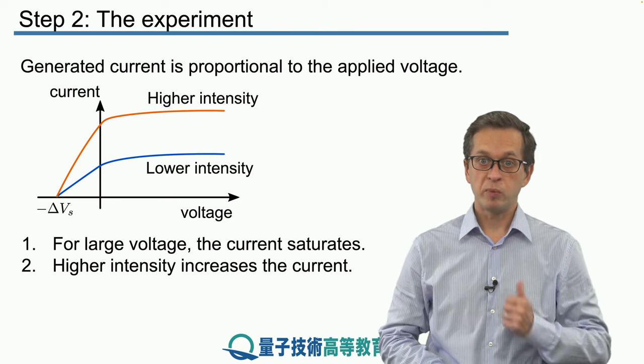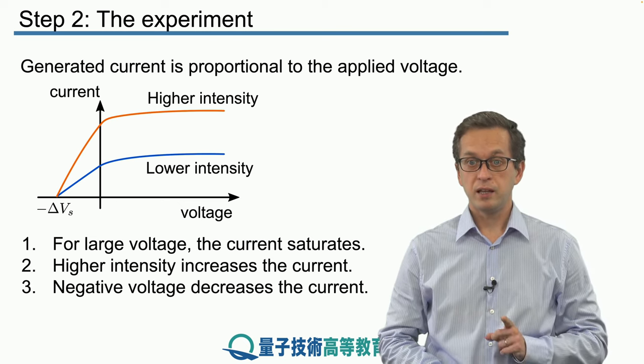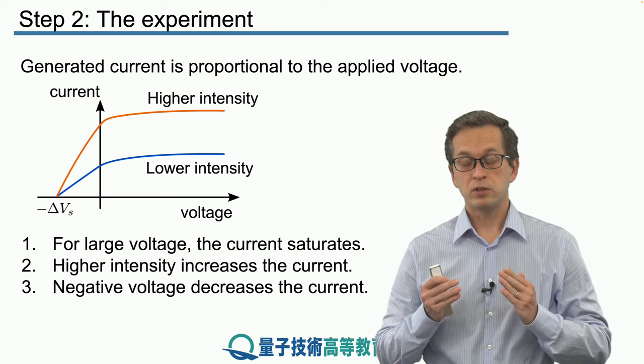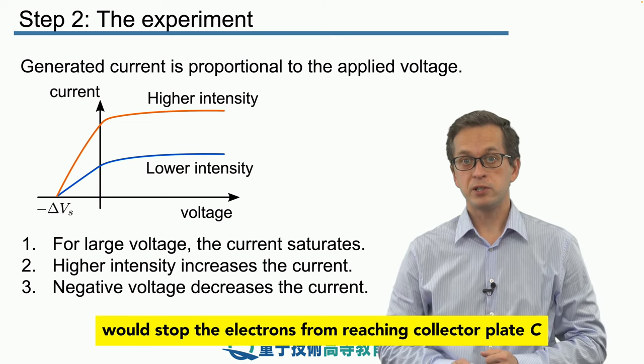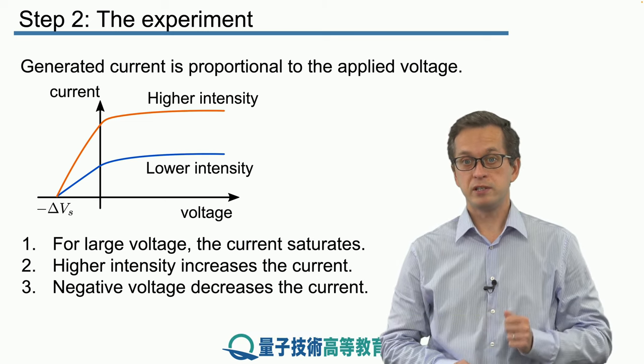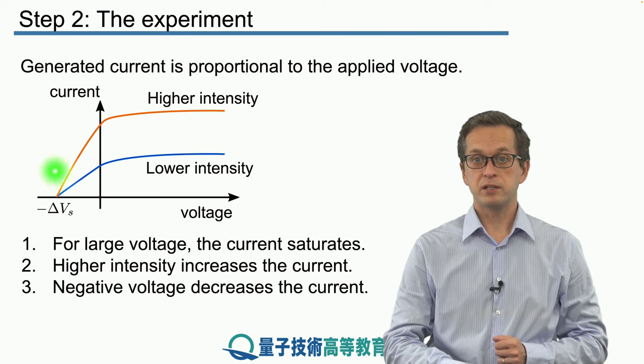Now let's go in the opposite direction and start decreasing the voltage. Negative voltage, as we said, was stopping the electrons from reaching the collector plate C, decreasing the current. And that's exactly what we see here by these curves.